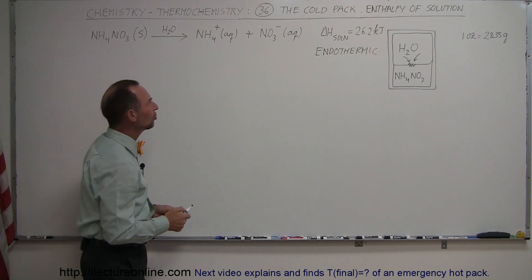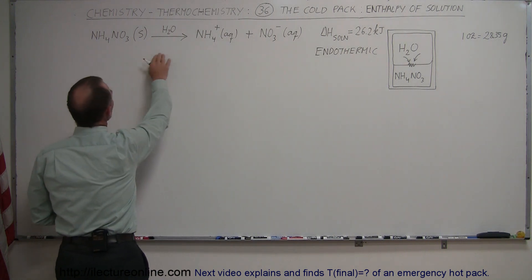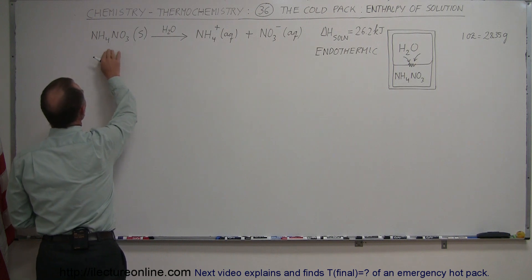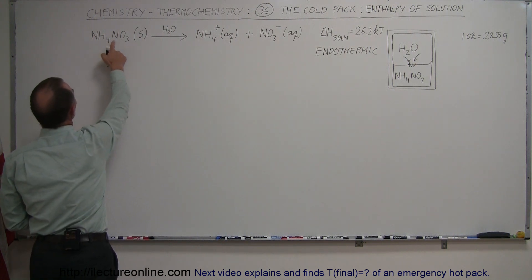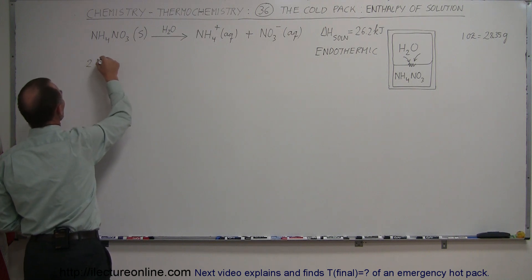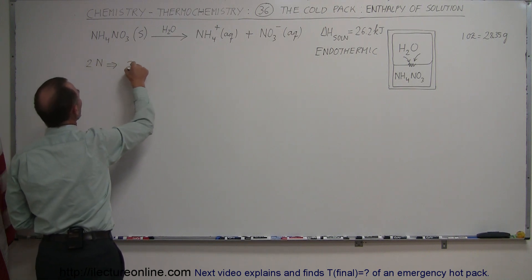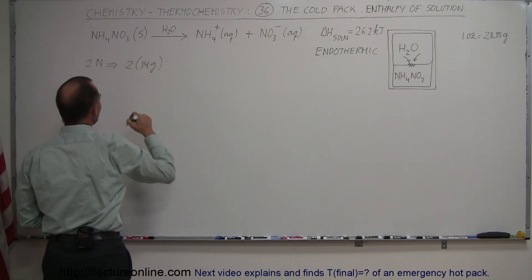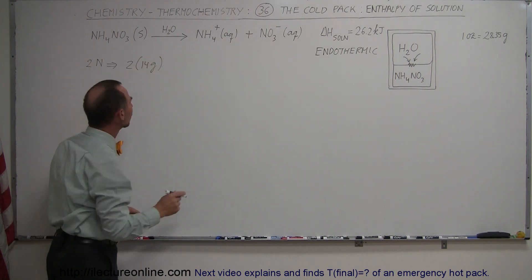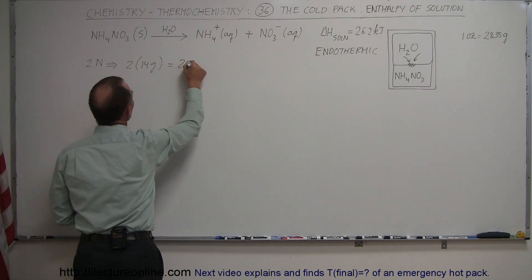Now let's try to figure out how much it will cool down. So let's assume that we have this equation here and we're going to find out the molar mass of ammonium nitrate. Okay, so we have two nitrogens. Two nitrogens amounts to two times 14 grams per mole, which is equal to 28 grams.